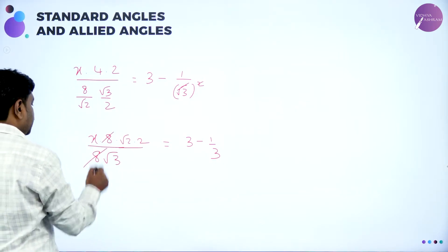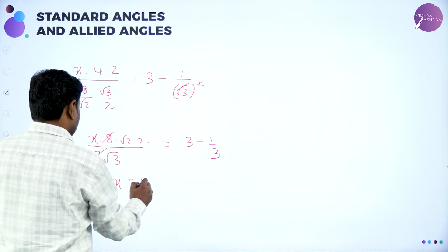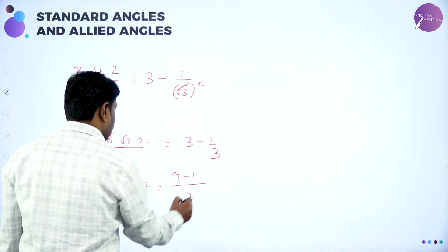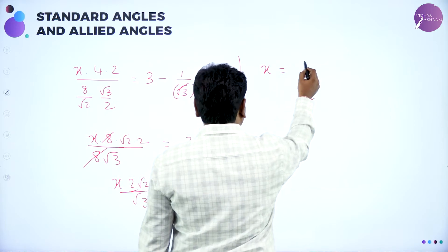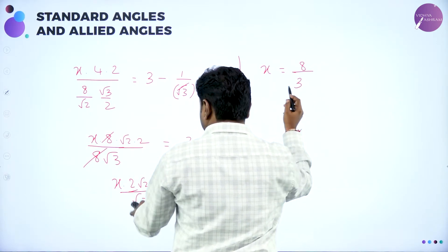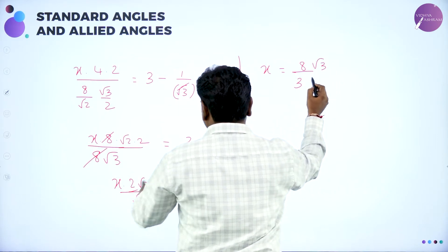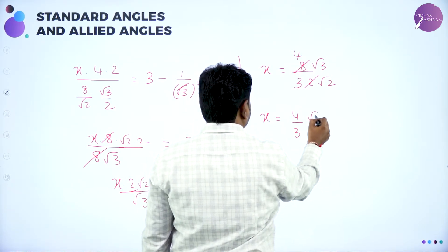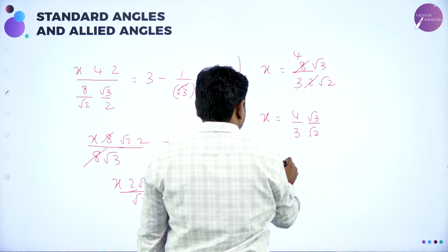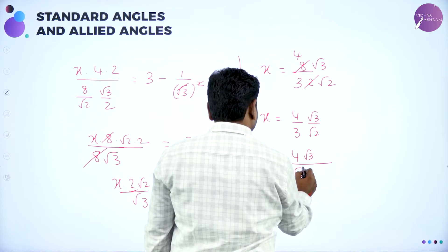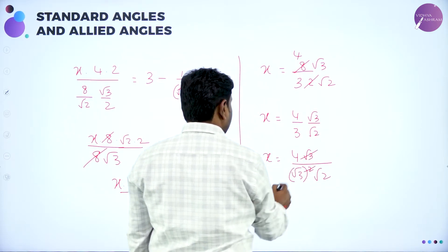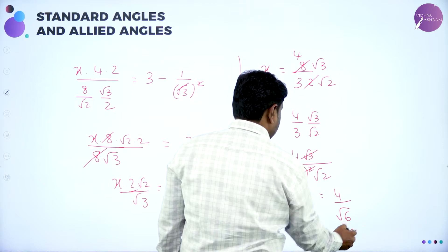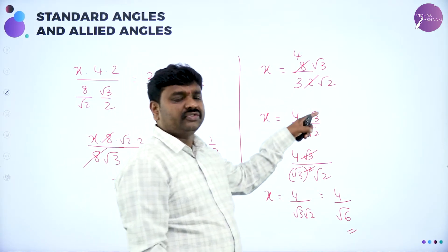Cancel 8 and 8. So x · 2√2/√3 = 9/3 − 1/3 = 8/3. Rearrange: transfer 2√2 to the denominator and √3 to the numerator. We get x = (8/3) · (√3 / 2√2) = 4√3 / (3√2), which can also be written as 4/√6. This is one possible answer. Another form is 4/(3√(3/2)).